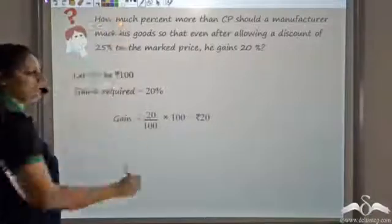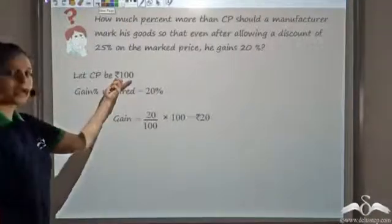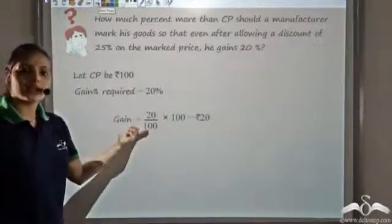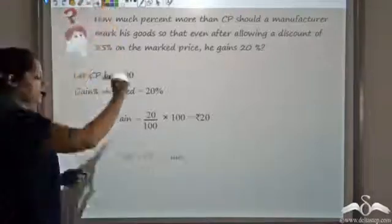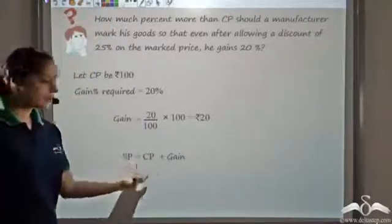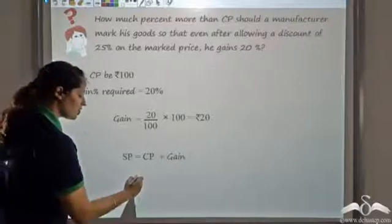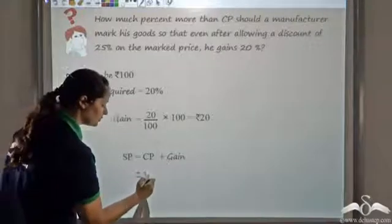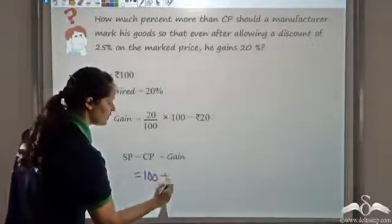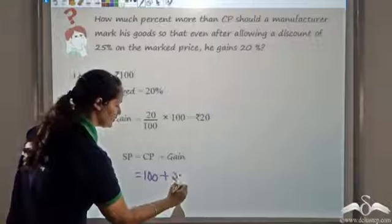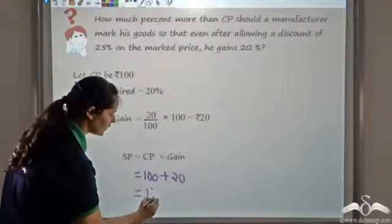So the gain is 20 rupees. We know the cost price and we know the gain, so we can find the selling price. Selling price is cost price plus gain. Cost price is 100 and gain is 20, so the selling price is 120.